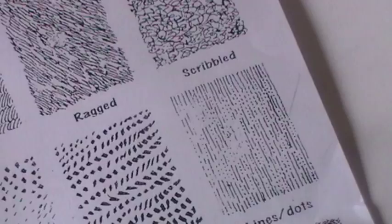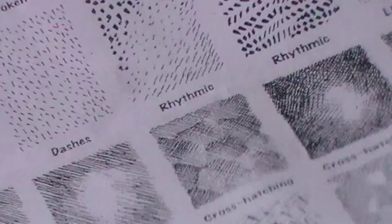As you can see I've used different types of mark making which I found on the sheet here. You can look at scribbled, ragged, broken, continuous marks.